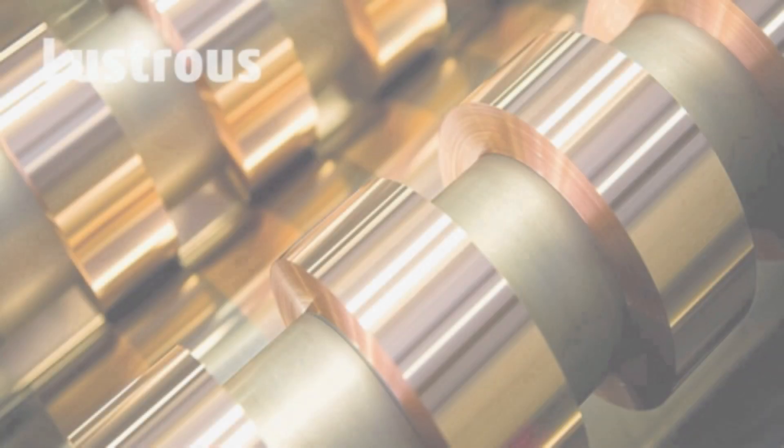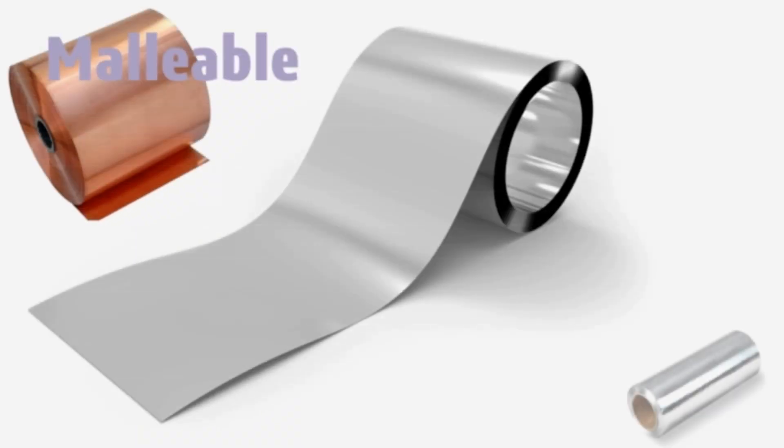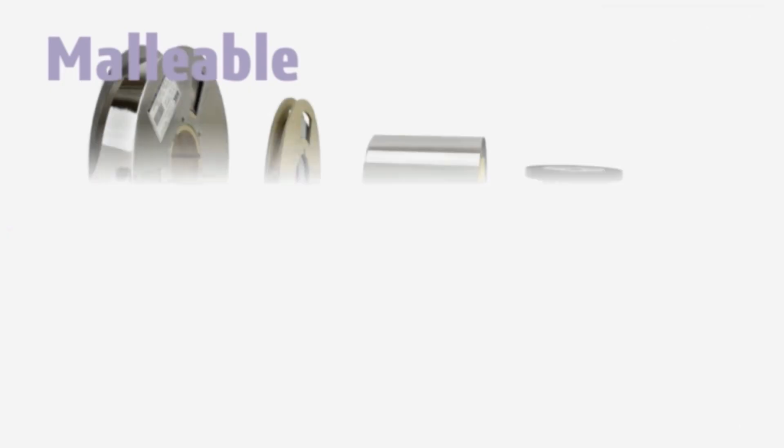Metals are malleable, we can prepare thin sheets of metals. Metals are ductile too, we can prepare wires and can elongate.